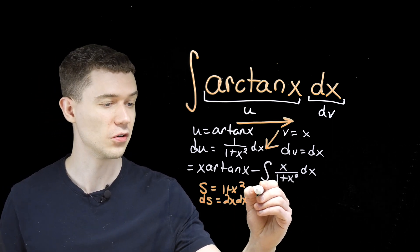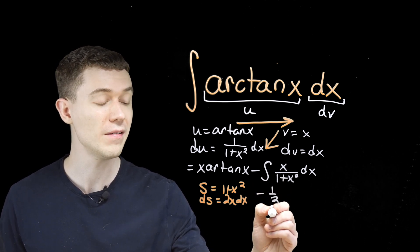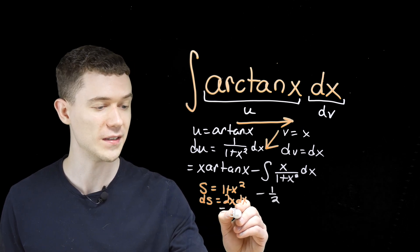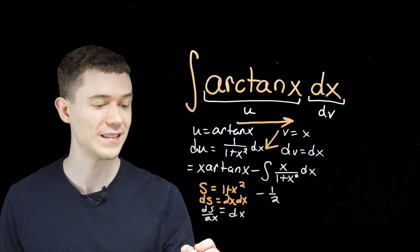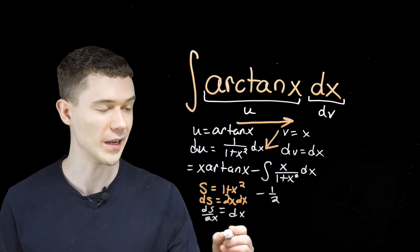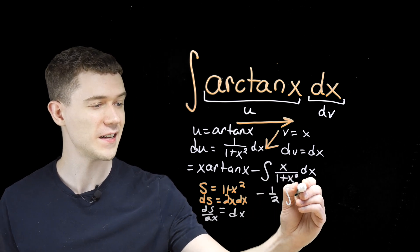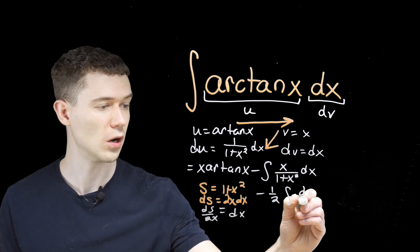This integral, and you'll forgive me, I'm running out of space here, will be minus 1 half, when we divide both sides by 2 here. If you like, you could say that x dx is ds over 2. And that's where that 1 half is coming out front. We'd have the integral. The x dx, that's becoming our ds. And this is over what I'm calling s.